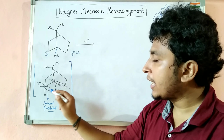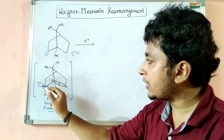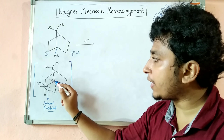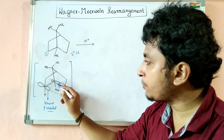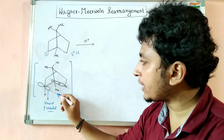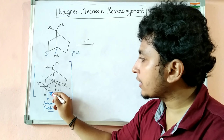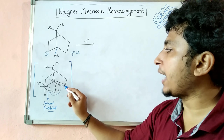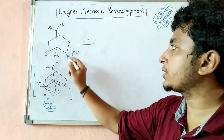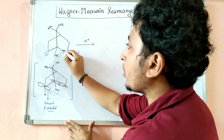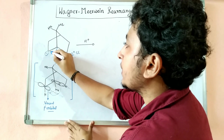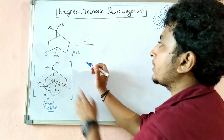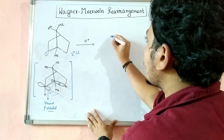Looking at the structure, this is the vacant p orbital of the carbocation, and a particular sigma bond is parallel to it. Therefore, this bond can break and that orbital can shift here, forming a new bond between these two carbons. This gives us a new structure with a tertiary carbocation.